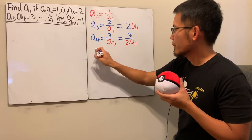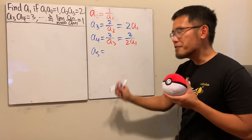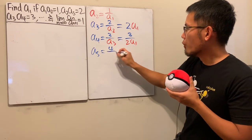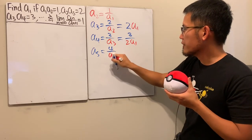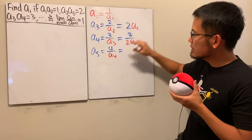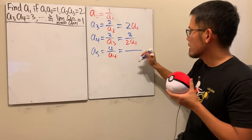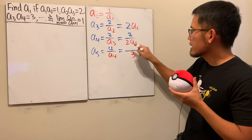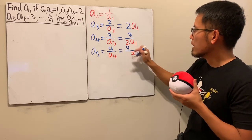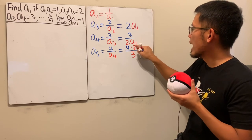Let's do a few more to see the pattern. a5 = 4/a4, and putting in the expression for a4, the bottom goes to the top, so a5 = (4·2a1)/3.